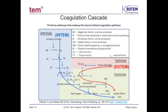The Extem assay evaluates the enzymatic factors of the extrinsic pathway — e.g., factor 7 — and those continuing through the common pathway — e.g., factors 2, 10, 5, and 13. This pathway represents those factors that are vitamin K dependent.